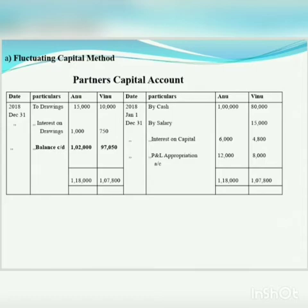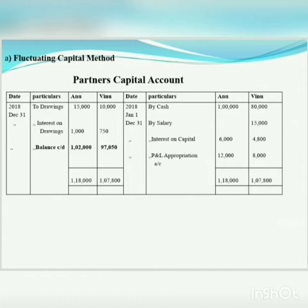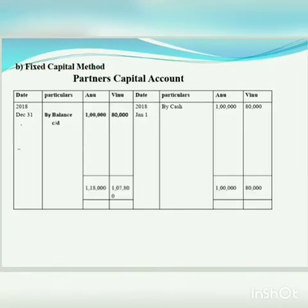On the credit side, by profit and loss appropriation account — the profit is rupees 20,000. The profit sharing ratio is 3:2. Anu's share: 20,000 into 3 by 5 equals rupees 12,000. Vinu's share: 20,000 into 2 by 5 equals rupees 8,000. These amounts are credited to the respective capital accounts. This completes the fluctuating capital method.